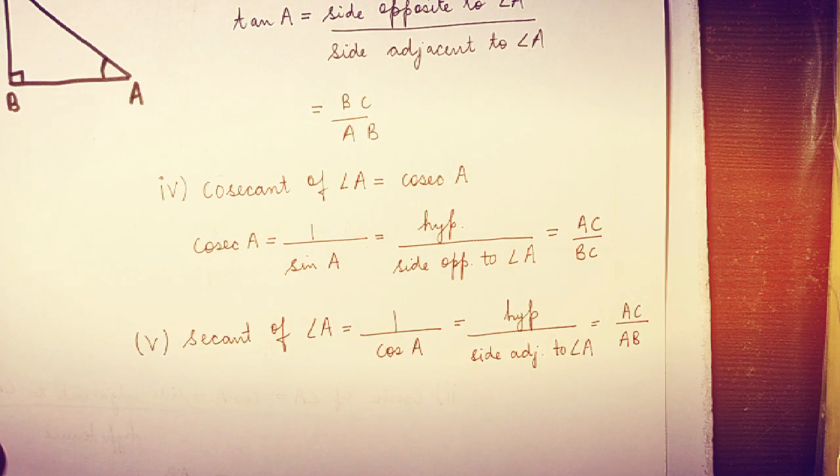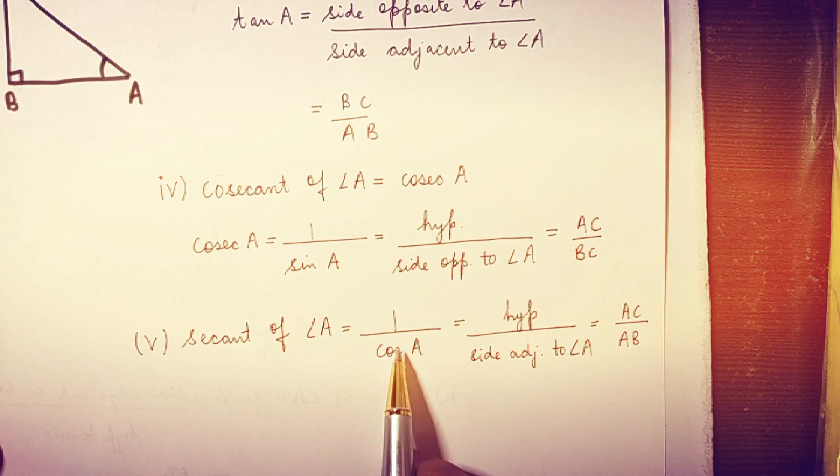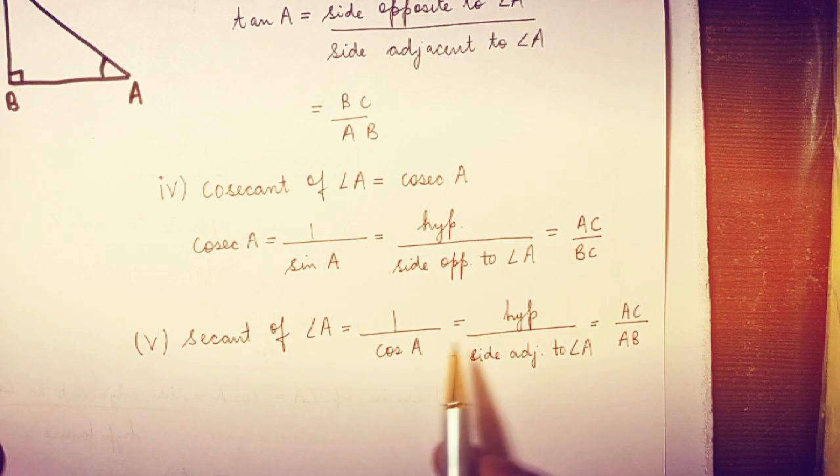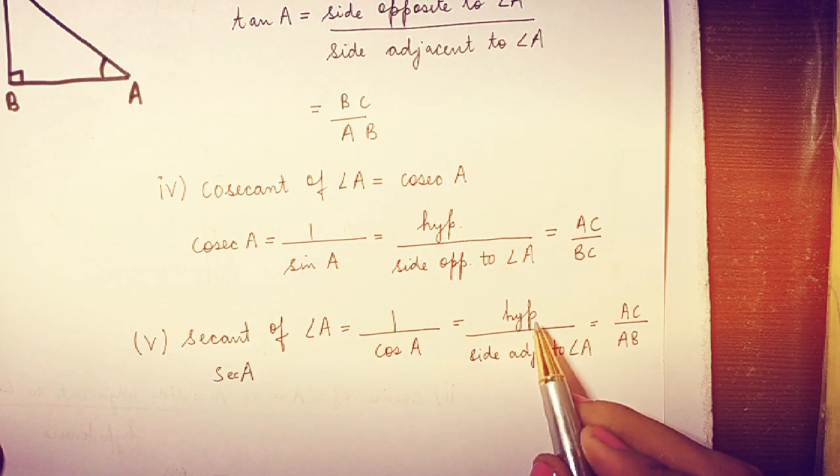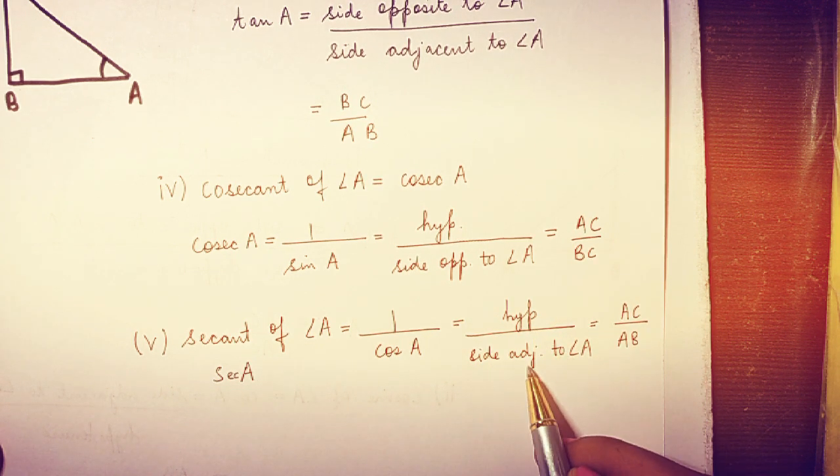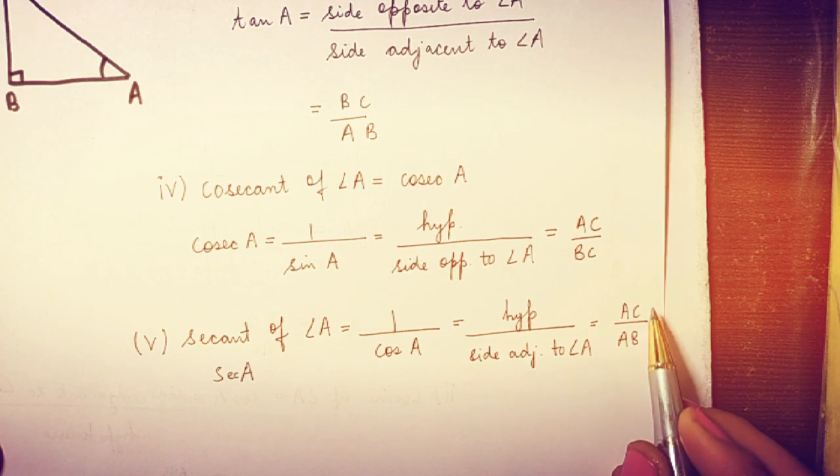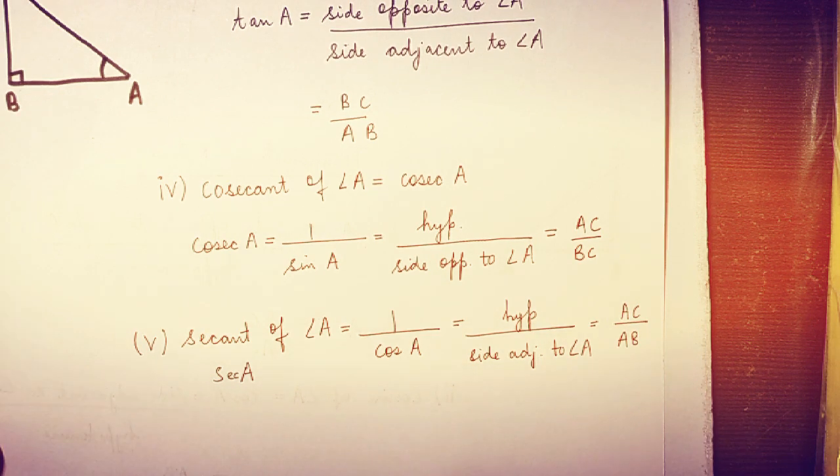The fifth trigonometric ratio is secant of angle A, which is equal to reciprocal of cos A. So 1 upon cos A is sec A. It is equal to hypotenuse divided by side adjacent to angle A. So we can say it is AC upon AB for this triangle.